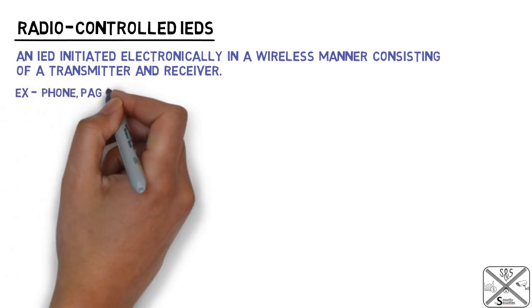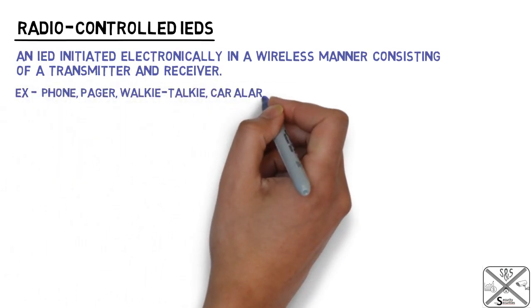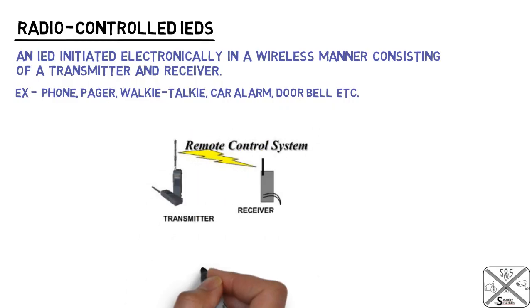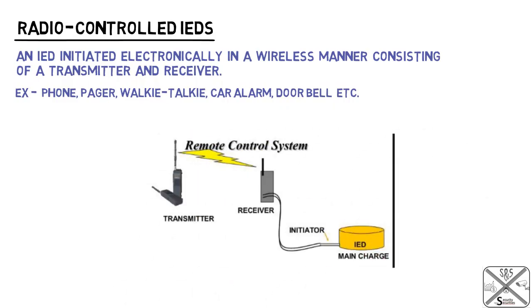Examples of radio control IED triggers include a phone, pager, walkie-talkie, car alarm, doorbell, etc. Radio control IEDs are initiated by a radio link.